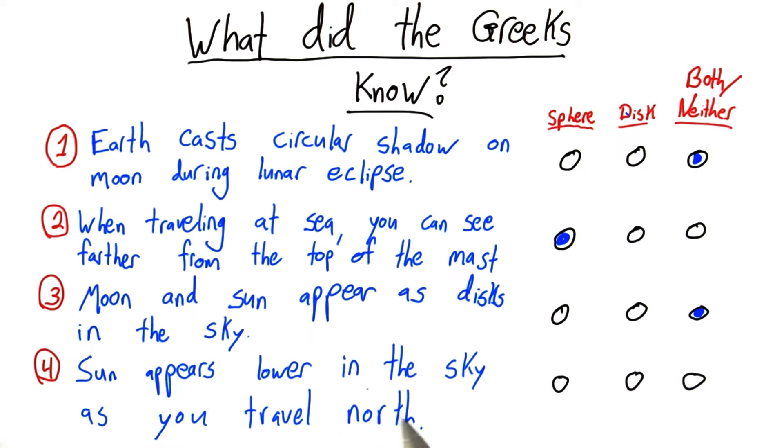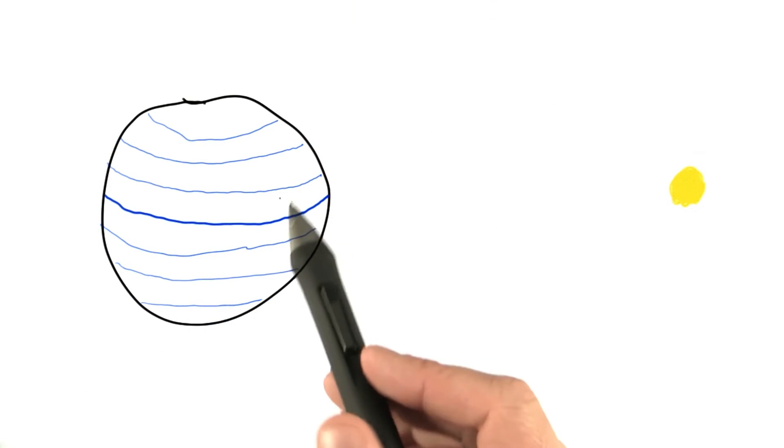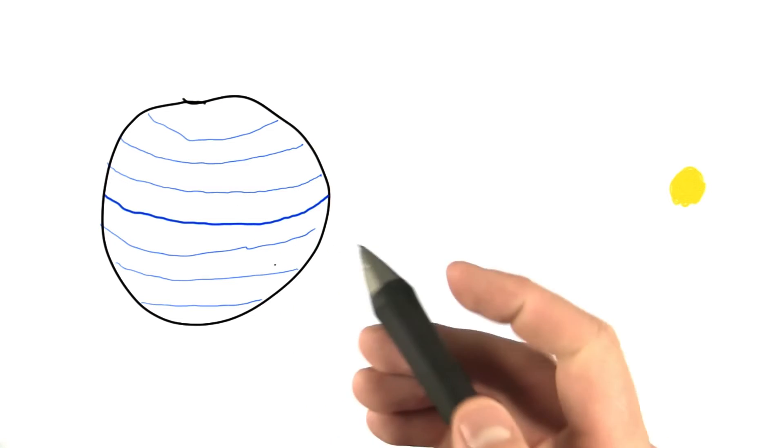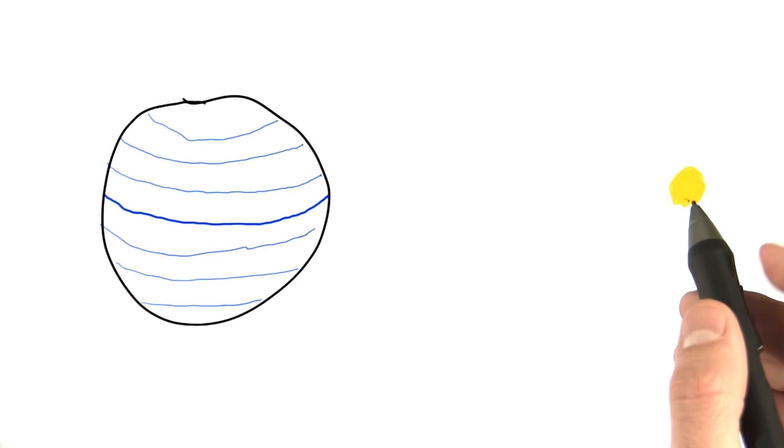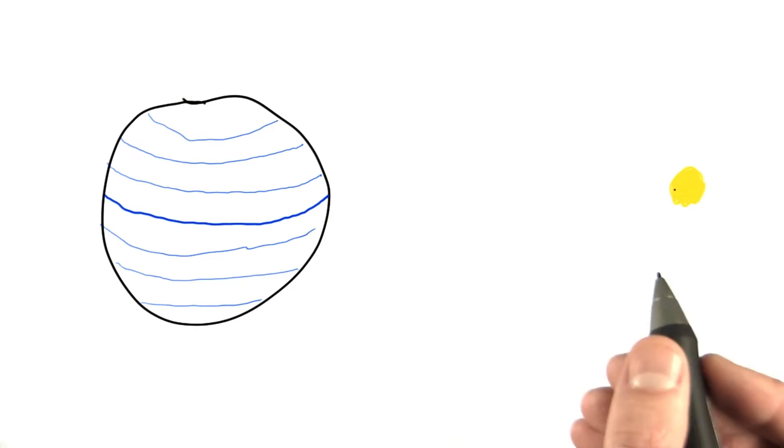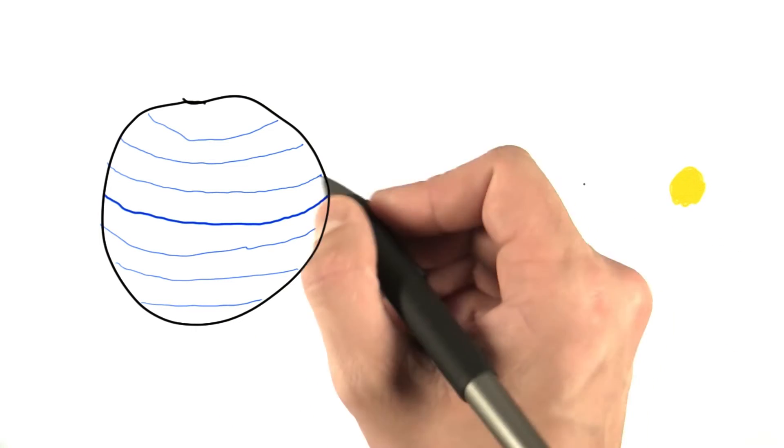This fourth point, that the Sun appears lower in the sky as you travel north, I said best supports the idea that the Earth is a sphere, and let's talk about why. Well, here's our spherical Earth. Well, it's supposed to be spherical. My drawing may not be the best you've ever seen, and here's the Sun. Now, in reality, the Sun is much, much, much larger than the Earth, and it's much farther away. For our purposes, this drawing will be fine.